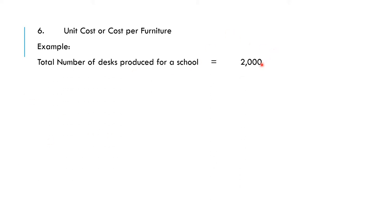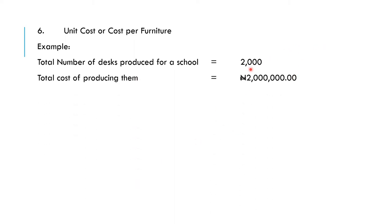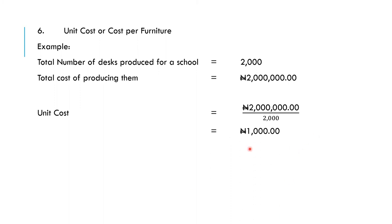Finally, let's look at the unit cost per furniture item. You are providing desks for a school — you have 2,000 desks and you spent 2 million naira to produce them. To find how much was spent producing one desk, divide 2 million by 2,000, which gives 1,000 naira. Each desk costs 1,000 naira. Knowing all of these unit costs helps you plan and project future educational expenditure.